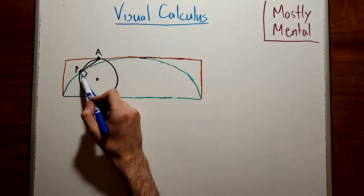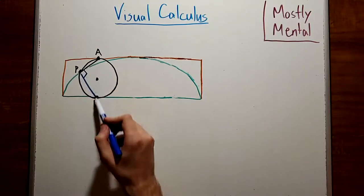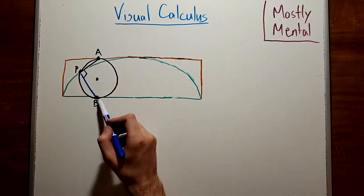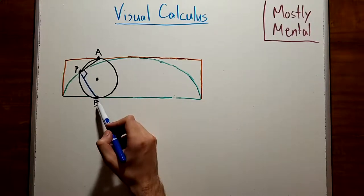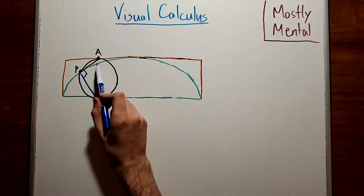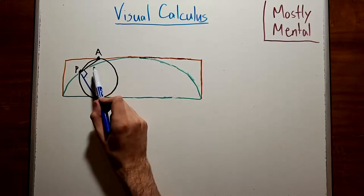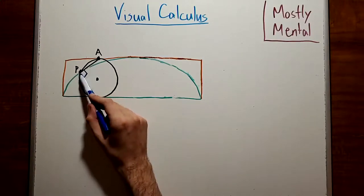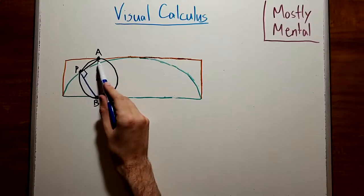And now we have a right angle inscribed in a circle, which means the two endpoints, A and B, must be at opposite ends of a diameter. And B is at the bottom of the circle, it's on the ground. So A must be at the top, which means the tangent at P passes through the top of the circle.